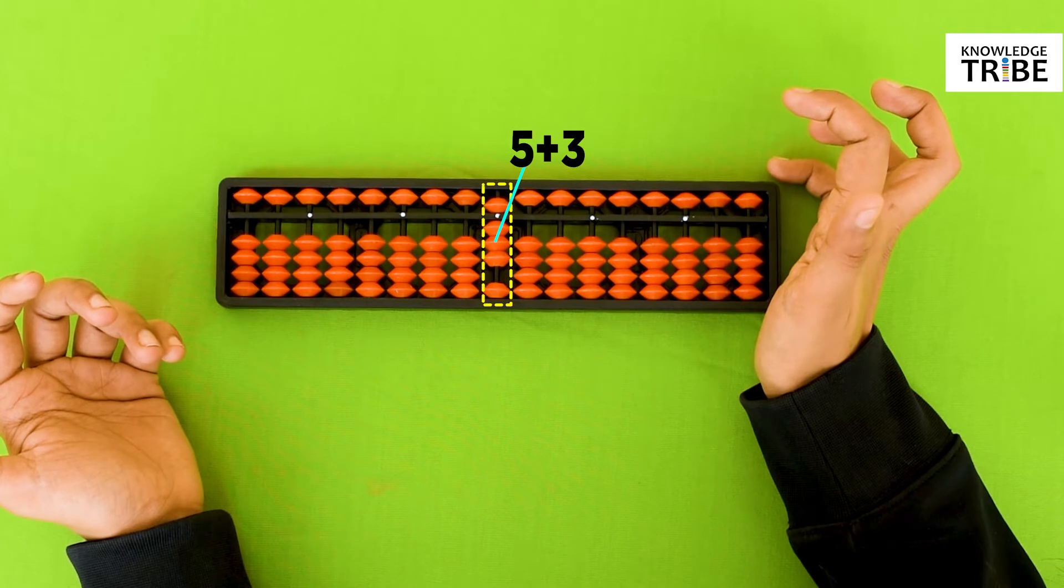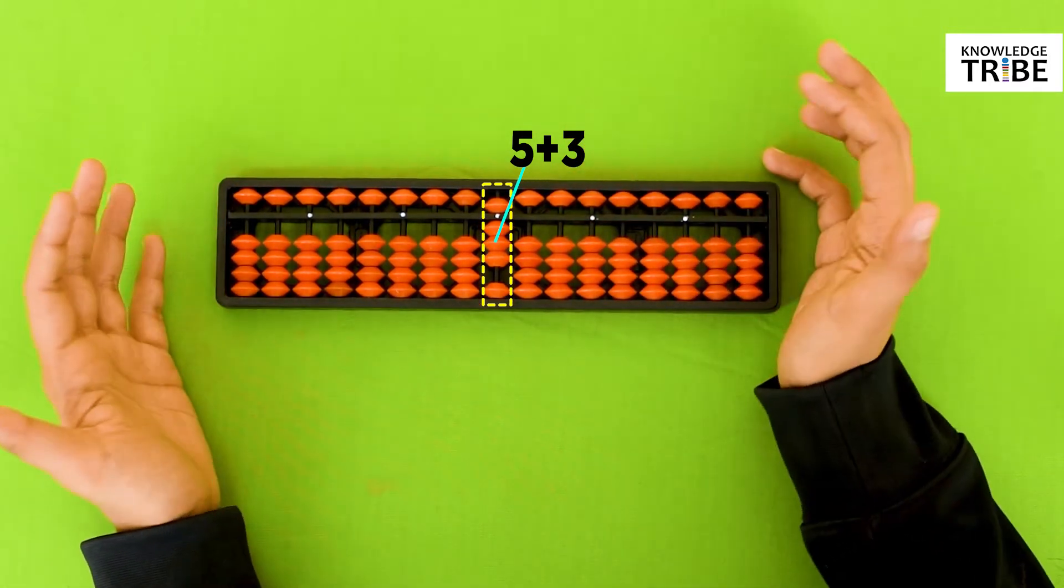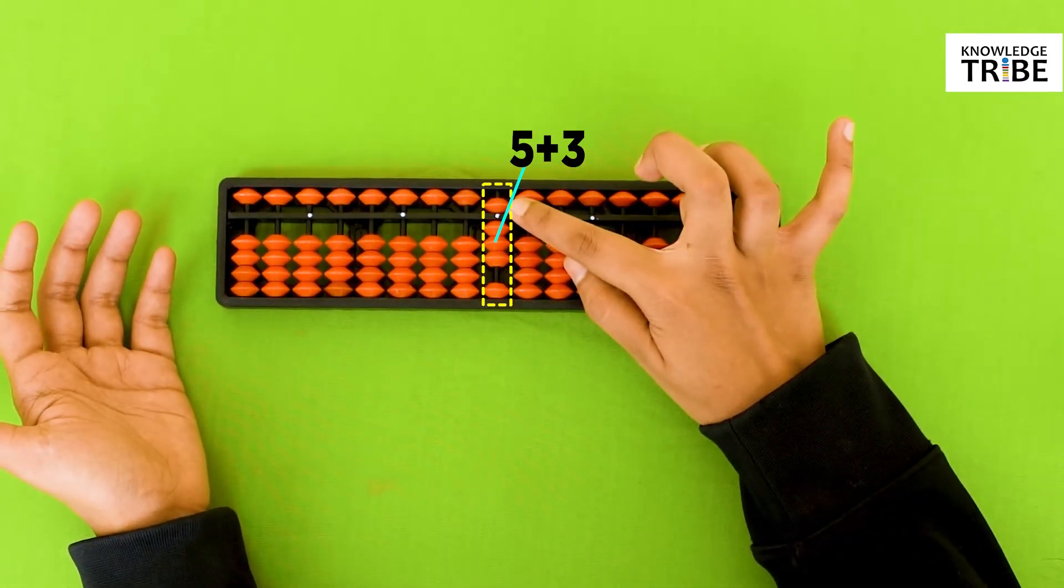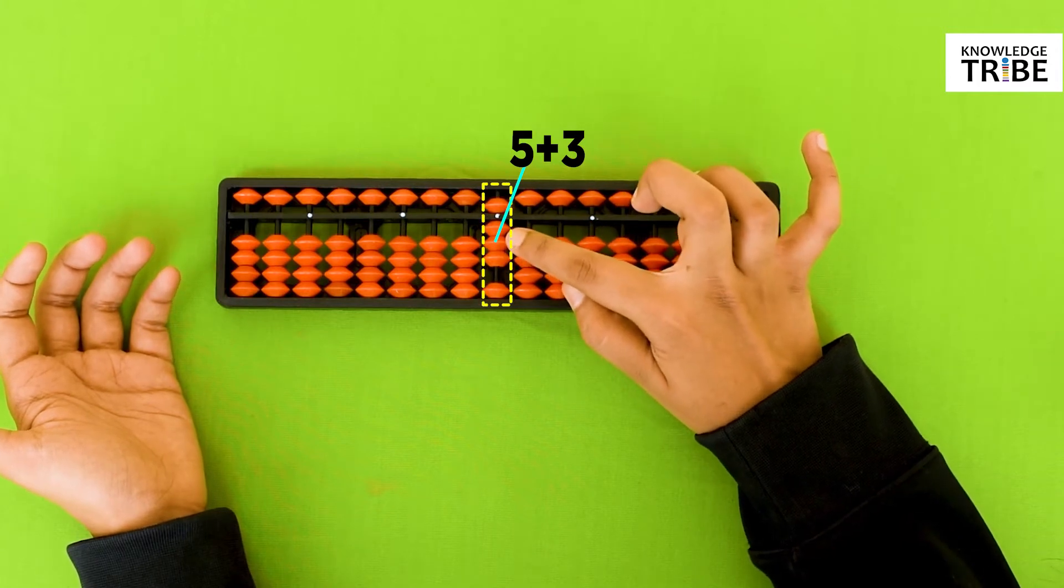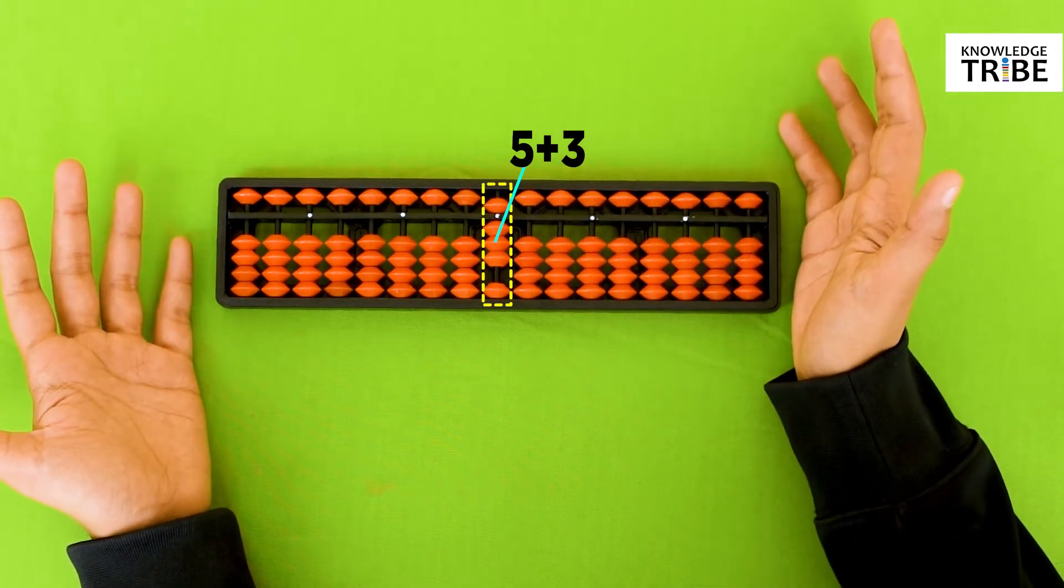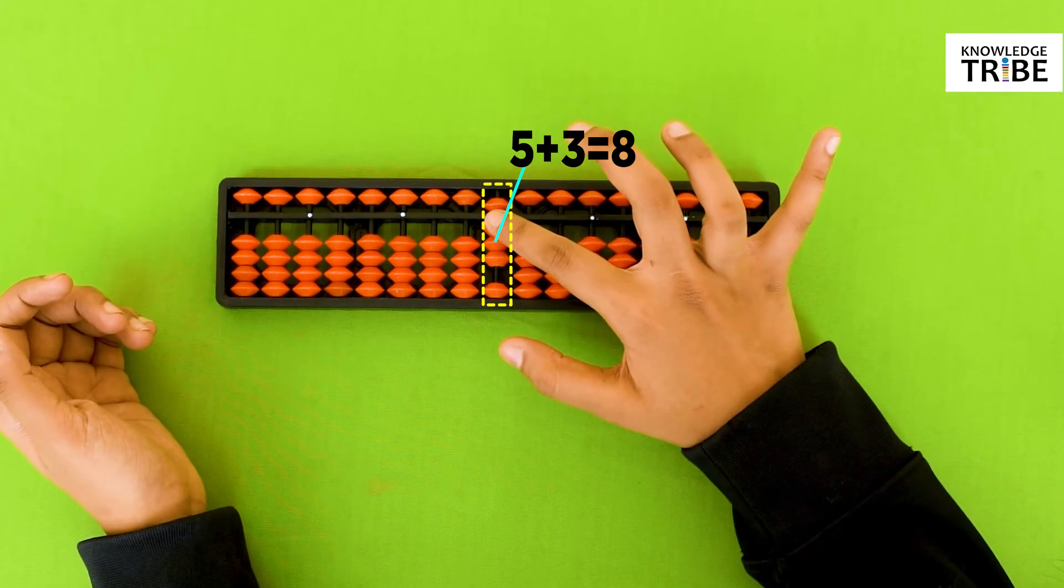So now tell me how much does this count? This is 5 and this is 3. 5 plus 3 is equal to 8. Exactly!